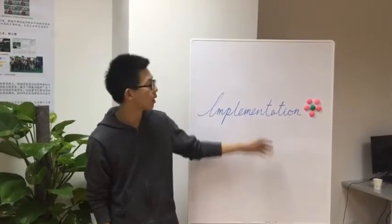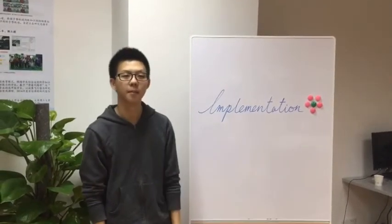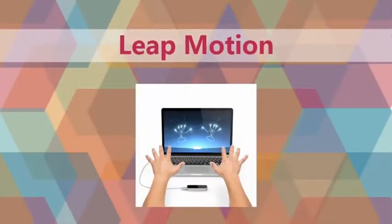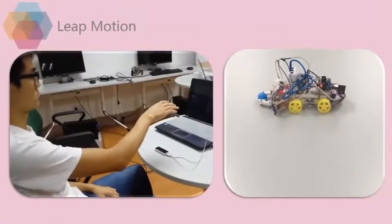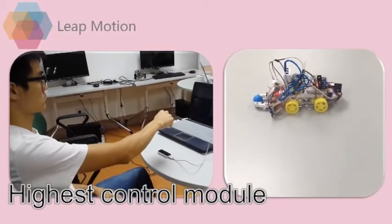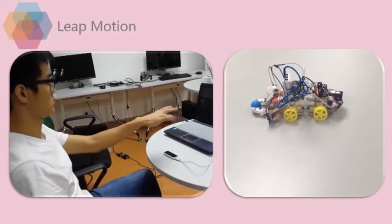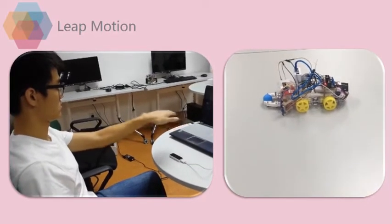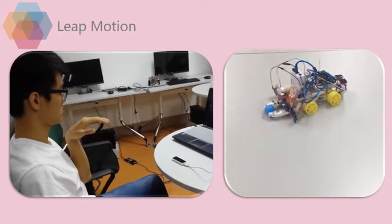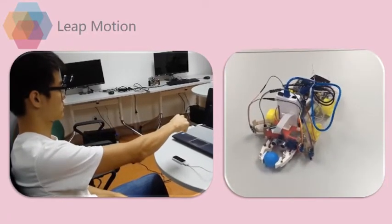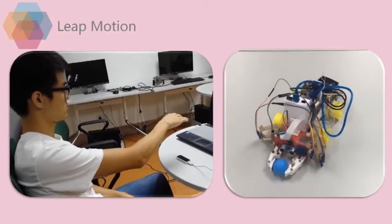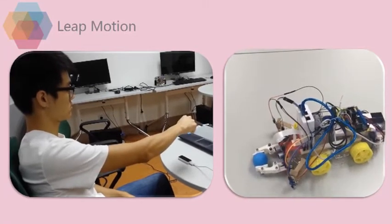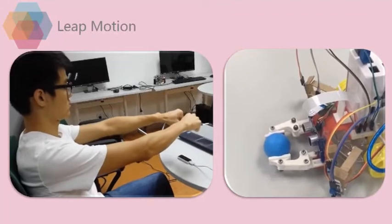Now we are going to show you the detailed implementation of our rescue system. Leap Motion is the highest control module of our smart car. It is a computer hardware sensor device that supports hand and finger motions as input, which does not require any hand contact or touching. We use different gestures to turn on the speech recognition mode, and to control the car to go forward, backward, and to turn left and right. We can also use gesture to release the gripper.